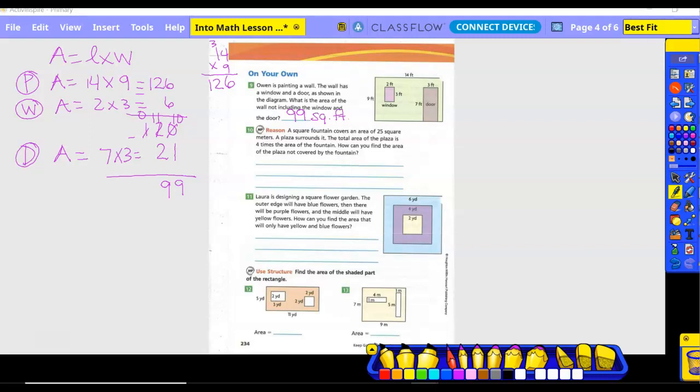Number 10. The square fountain covers an area of 25 square meters. The plaza surrounds it. The total area of the plaza is 4 times the area of the fountain. How can you find the area of the plaza not covered by the fountain? Drawing a picture would be a good idea. The fountain is 25 square meters. The area of the plaza around it is 4 times as much, so 25 times 4 is 100. So then 100 minus 25 equals 75 square meters.